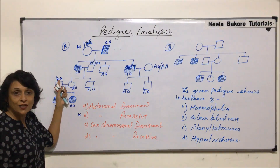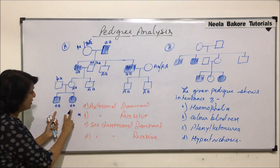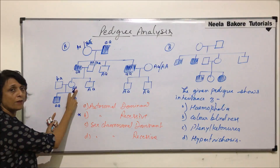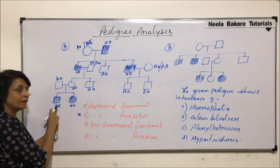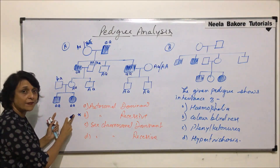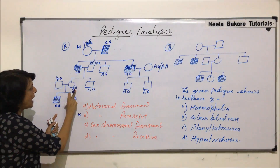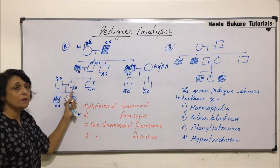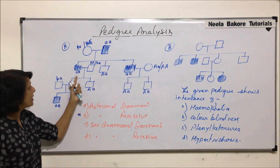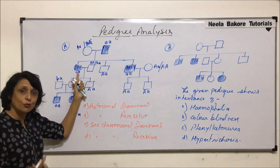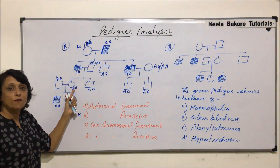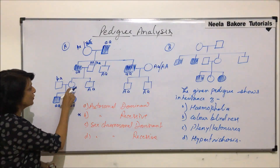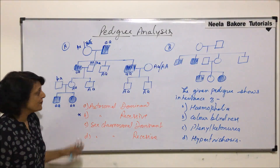Each affected grandchild received one recessive allele from the mother and one from the father. Since the father is not showing the trait, he must carry one dominant allele — making him heterozygous. The mother (daughter from generation 2) got her recessive allele from her mother, who had two recessive genes (was homozygous recessive). So this female is a carrier.